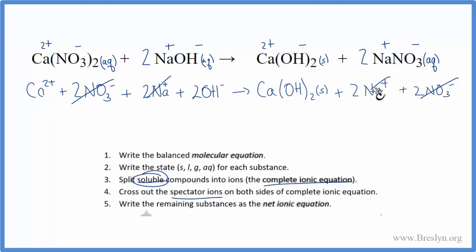So now that we've crossed the spectator ions out, what's left is the net ionic equation. And that looks like this. And this is the net ionic equation for Ca(NO3)2 plus NaOH, calcium nitrate plus sodium hydroxide.